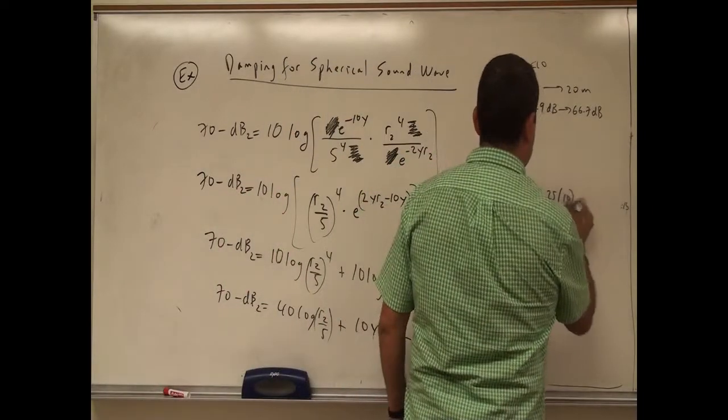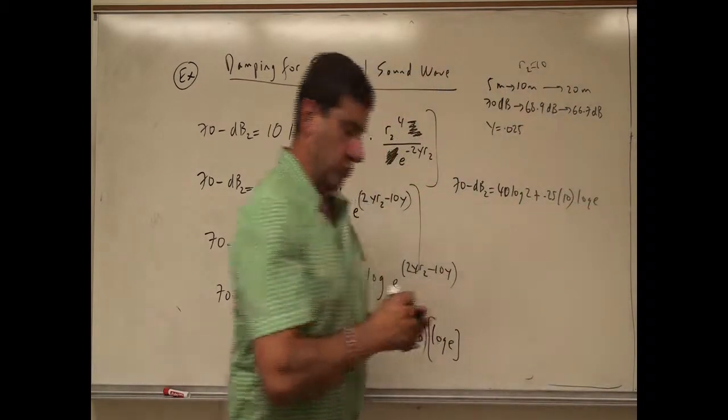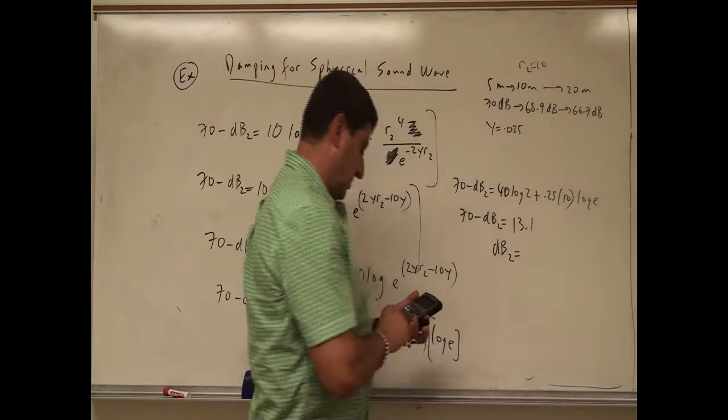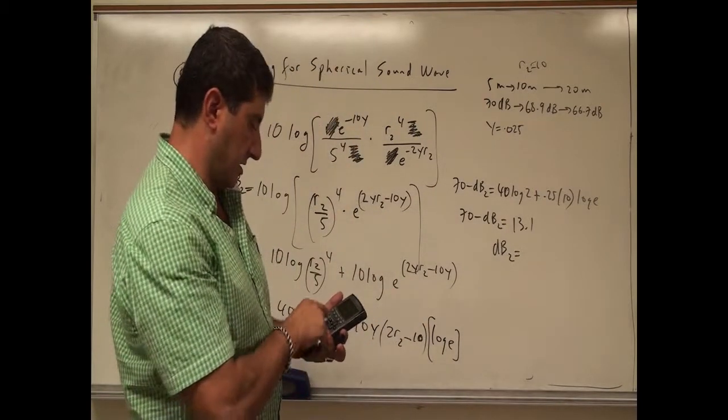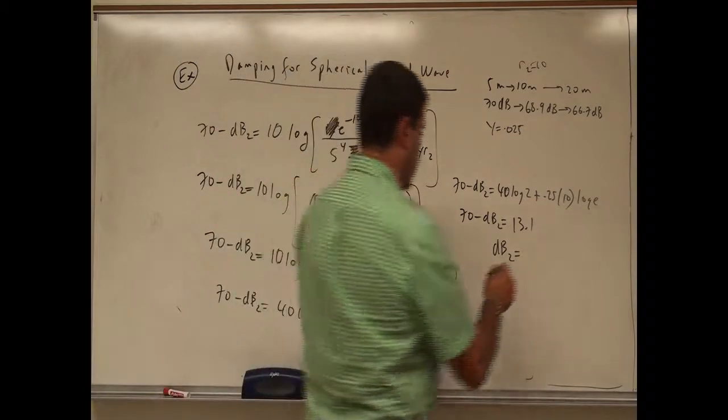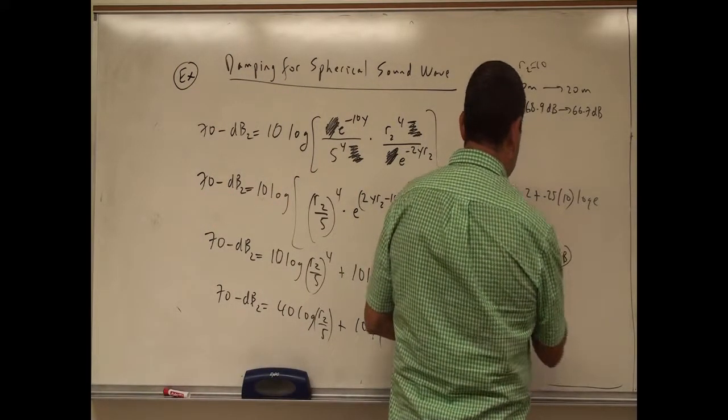Another 10. Then you're going to have log of E. So let's calculate all of that. Decibels is going to be 70 minus the answer 56.9. 56.9 decibels.